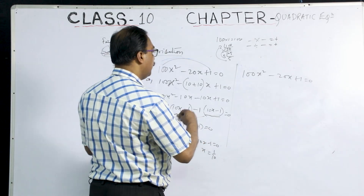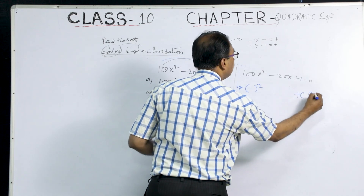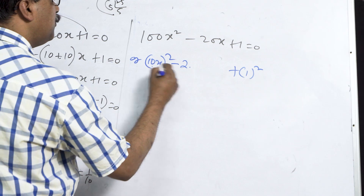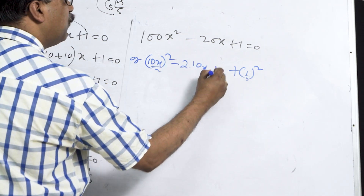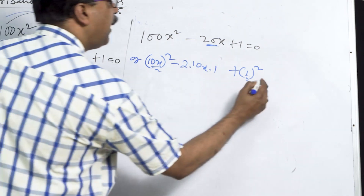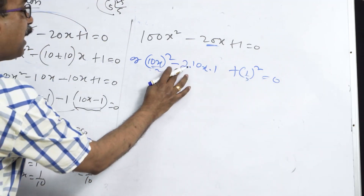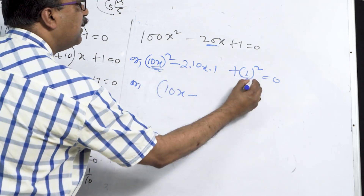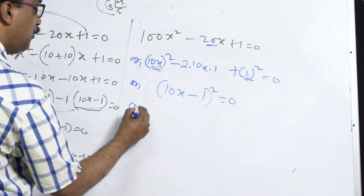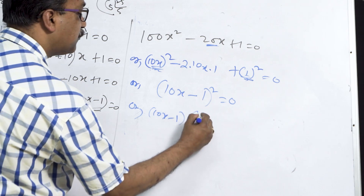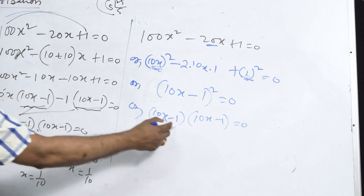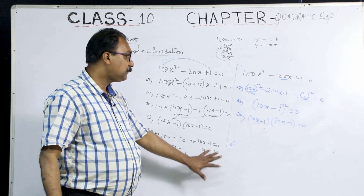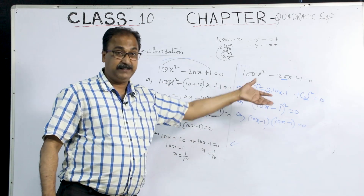We can also solve this using a formula. Check if you can make a perfect square: 100 = 10², 1 = 1², and the middle term −20x = −2 × 10x × 1. So this fits a² − 2ab + b² = (a − b)², with a = 10x and b = 1. Therefore (10x − 1)² = 0, which gives the same (10x − 1)(10x − 1) = 0 and x = 1/10. Both factorization methods reach the same answer.